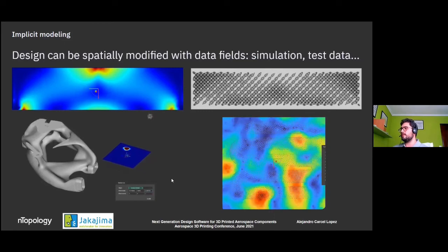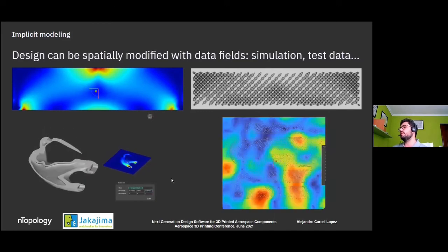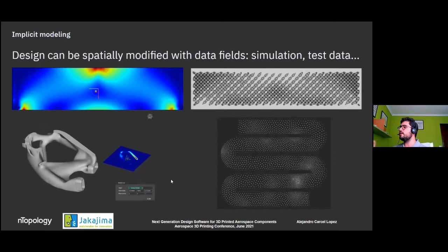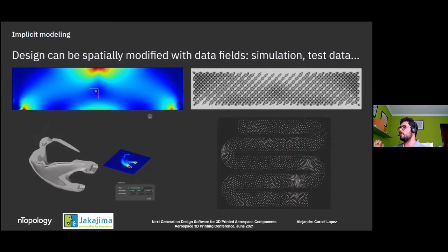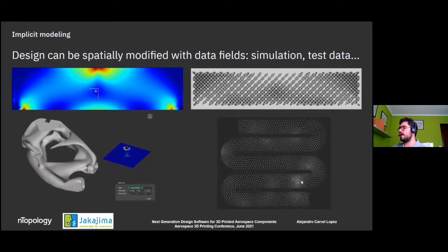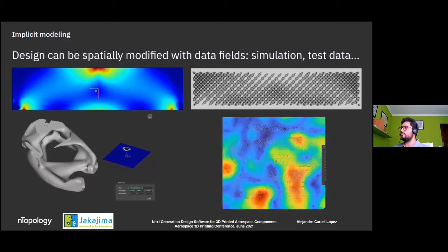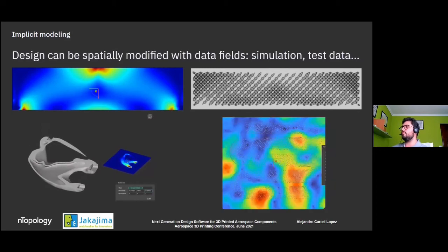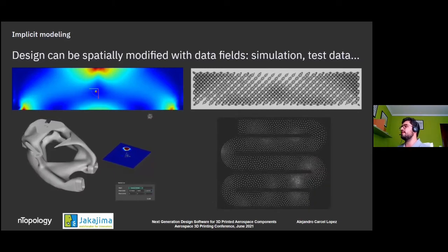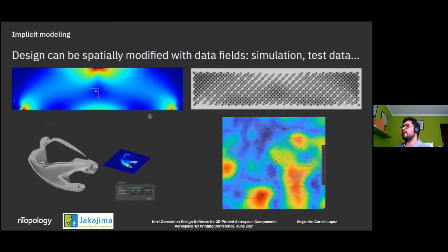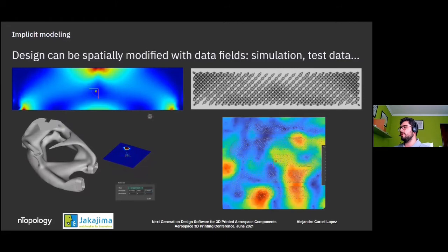Here's one more use case: a heat exchanger based on columns exposed to a heat map. What we're doing here is increasing the density of those columns automatically based on the thermal map — in the high thermal loading regions, we have a much higher density of columns. So I'm giving you three different ways this field-driven, simulation and test data-driven capability can be used: increase thickness, empty out low-stress regions, or increase lattice density, all depending on some data.